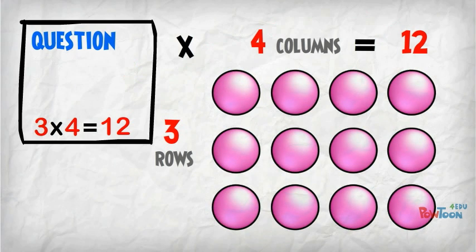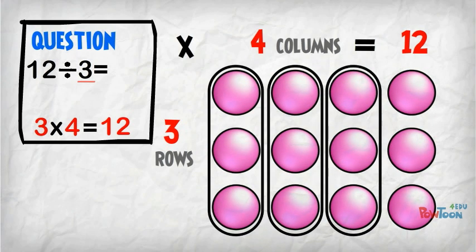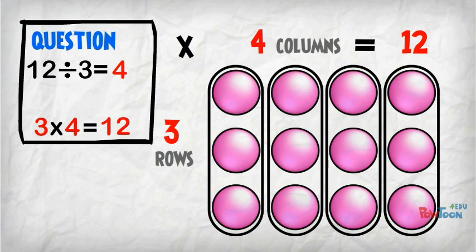If we have the question 12 divided by 3, we are making groups of 3. You can see we get 4 groups of 3. 12 divided by 3 is 4.